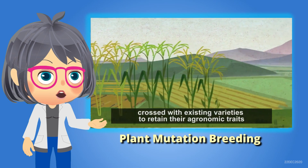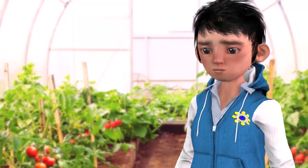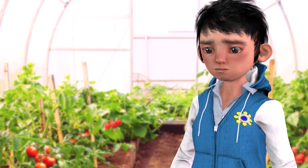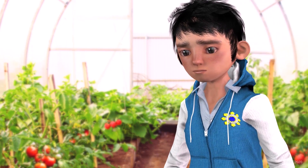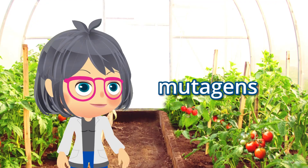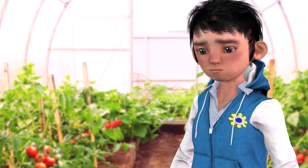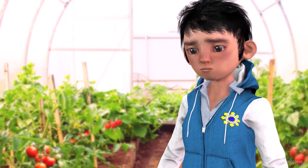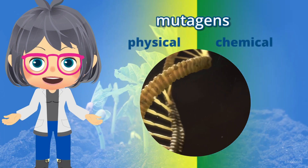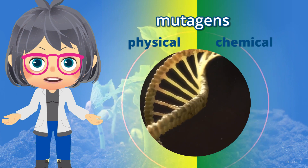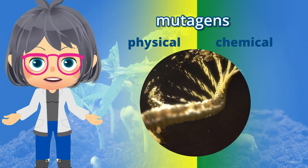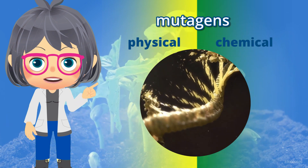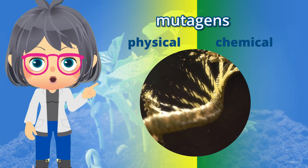Wow, accelerated evolution! How is it done? By using mutagens. What are mutagens? Mutagens are physical or chemical agents that may start errors in a plant's DNA, thus starting the mutation.